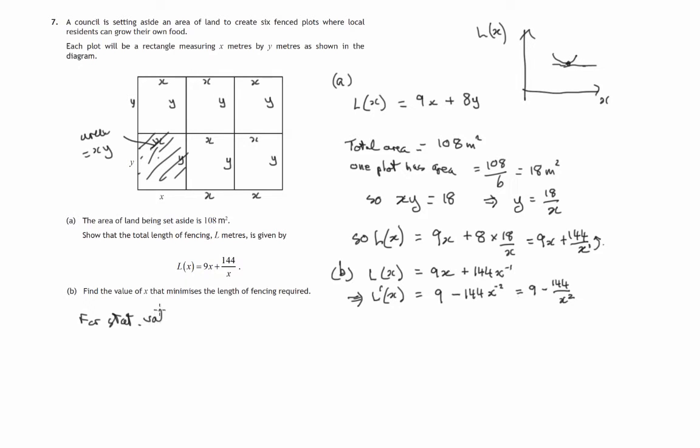So for stationary values we'll set L dashed of x equal to 0. So 9 minus 144 over x squared equal to 0. So let's multiply both sides by x squared.